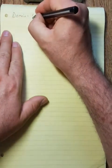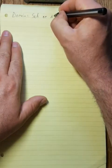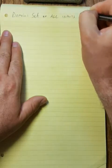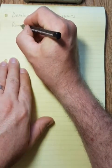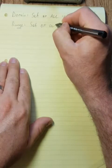First one is the word domain. Now, the domain is the set of all inputs. And then we have the range, which is the set of our outputs.